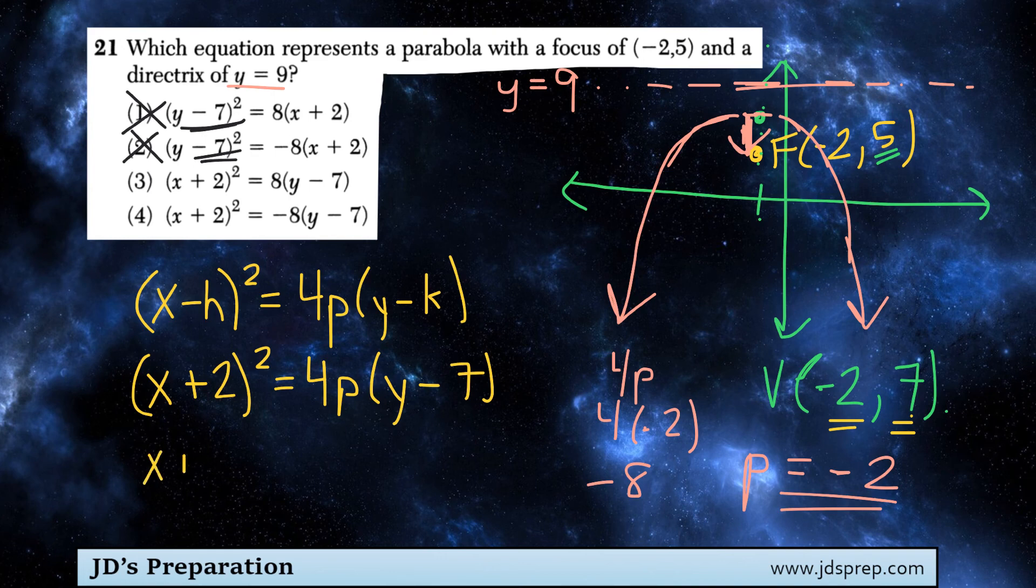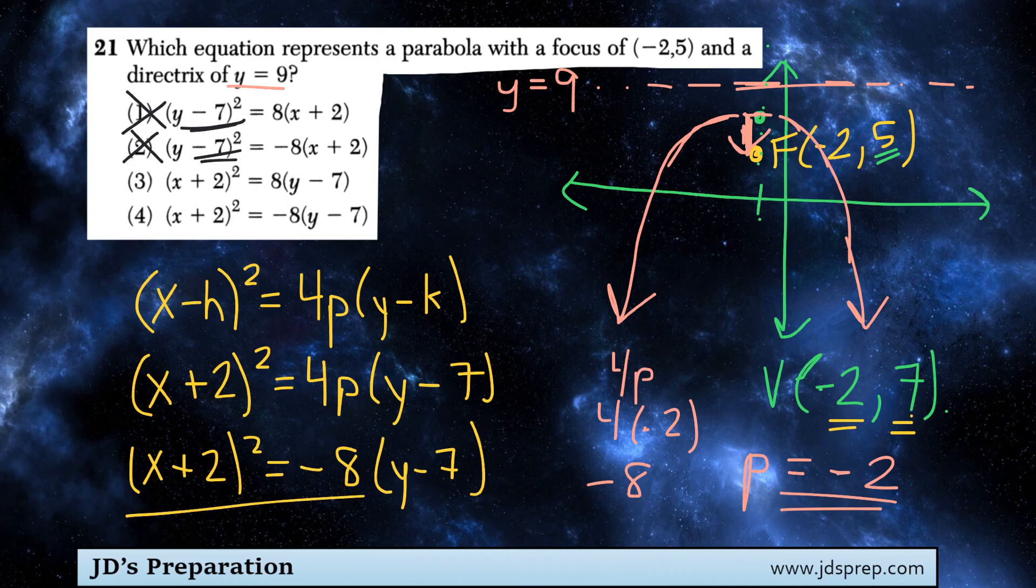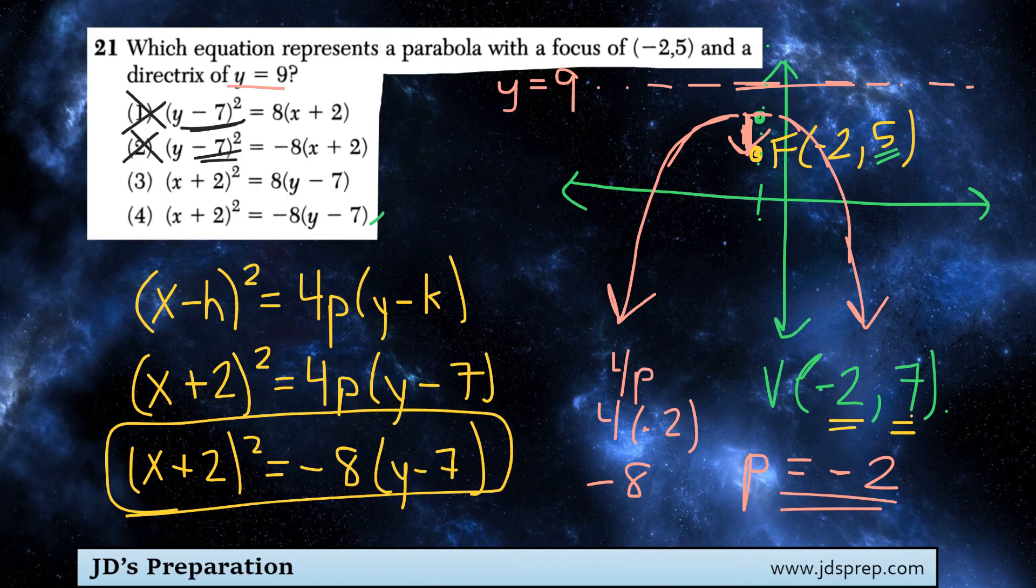So that means our final equation will be (x + 2)² equals negative 8 times (y - 7). And that matches option number 4. I hope that was helpful, and thanks for visiting JD's preparation.